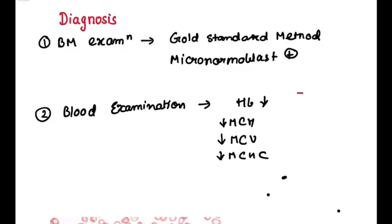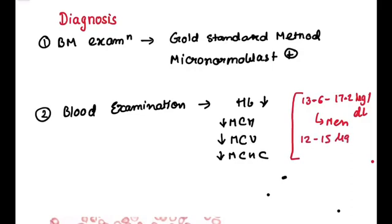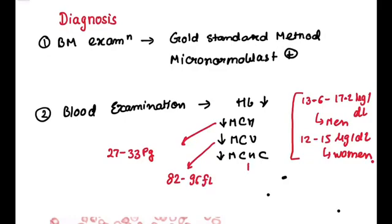So what are the normal ranges of all these parameters? Hemoglobin normal range is 13.6 to 17.2 microgram per dl in men and 12 to 15 microgram per dl in women. Normal range of MCH is 27 to 33 picogram. Normal range of MCV is 82 to 96 femtolitre. Normal range of MCHC is 33 to 37 gram per dl.